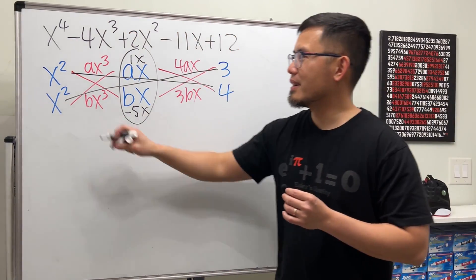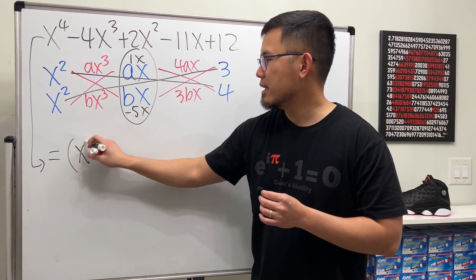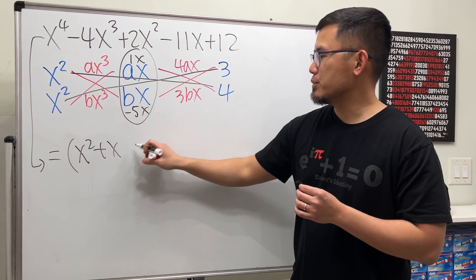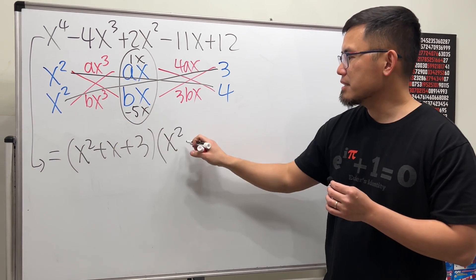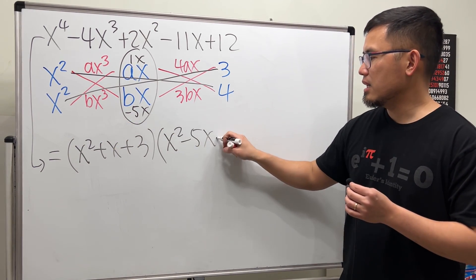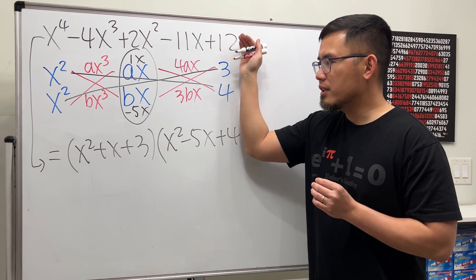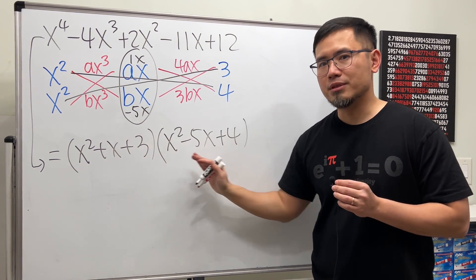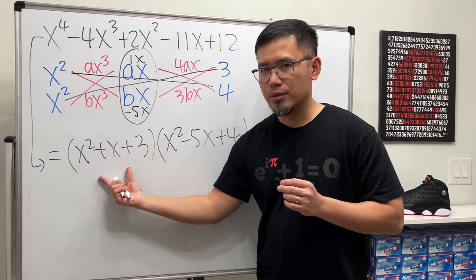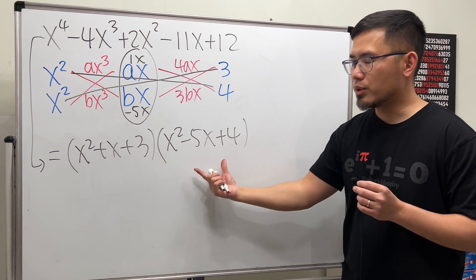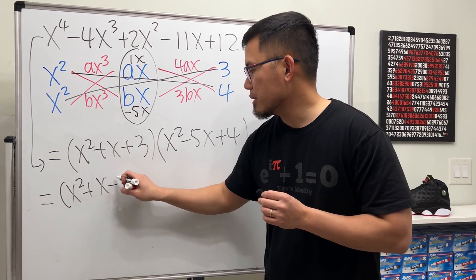Now, we know this right here. I'll just put it down here for you guys. It's equal to x squared plus x plus 3. That's the first factor. And then the second factor is x squared minus 5x plus 4. As you can see, we have a fourth degree polynomial and we factor it as a quadratic times a quadratic. But we are not done yet. This right here is not factorable with real numbers. But this right here is. So, we should continue. I'm going to keep this right here. x squared plus x plus 3.